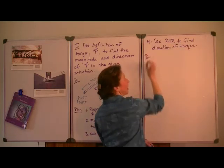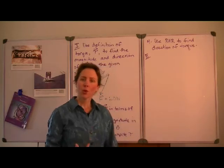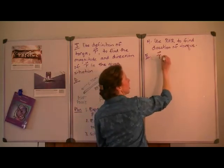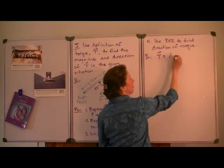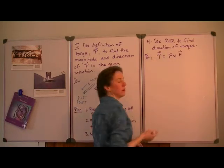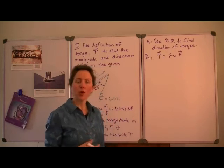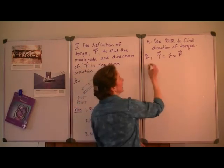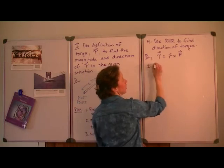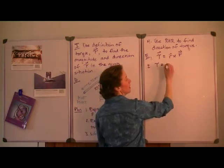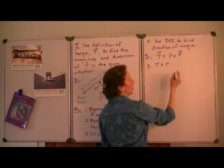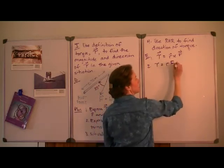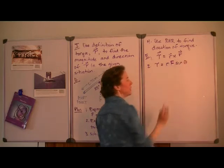So now we're ready to evaluate this problem. The torque is defined as the cross product between the moment arm and the applied force. The cross product yields a vector quantity, which has both magnitude and direction. The magnitude of the torque is computed as the magnitude of the moment arm — the length of the moment arm — times the magnitude of the applied force, times the sine of the angle between them.